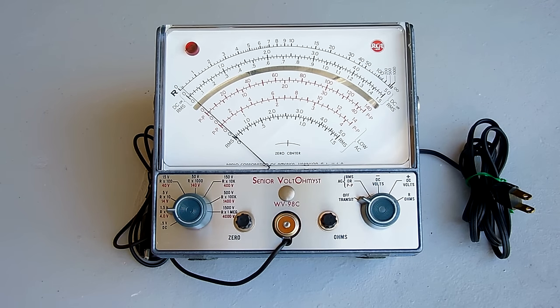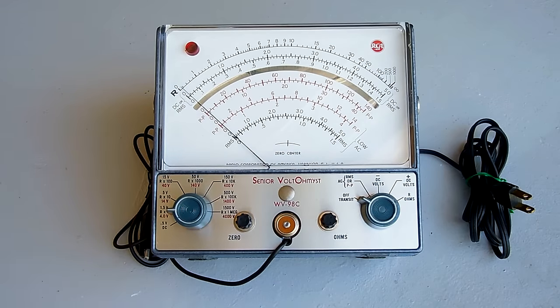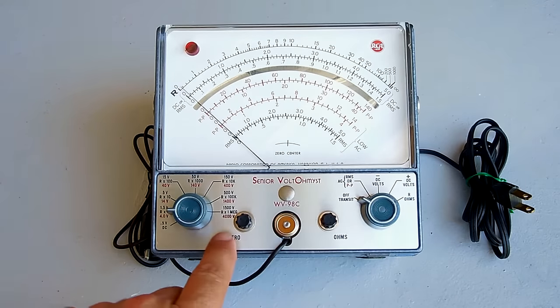When it comes to measuring AC volts, you can measure up to 1,500 volts. And once again, meters like you see here usually only measure up to 750 volts. And keep in mind, this will also do peak-to-peak AC voltage. You can see here, P2P, all the way up to 4,000 volts.